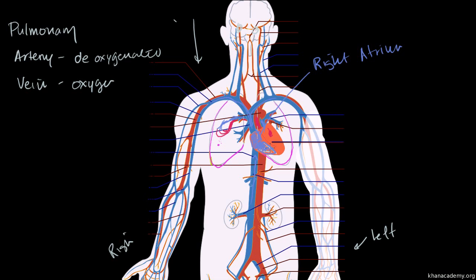From the right atrium, it passively flows into the right ventricle — the ventricles do all the pumping. The ventricle contracts and pumps this deoxygenated blood through this pipe into the pulmonary artery. This was a vein going to the heart — the inferior vena cava and superior vena cava are veins, they're deoxygenated. Then I'm pumping this deoxygenated blood away from the heart to the lungs. This is in an artery — the pulmonary artery — then it gets oxygenated, and now it's in the pulmonary vein.